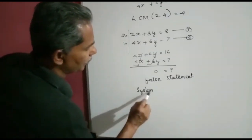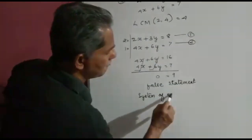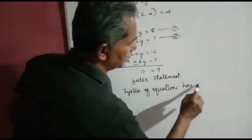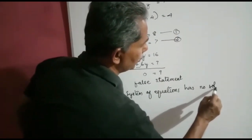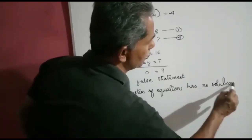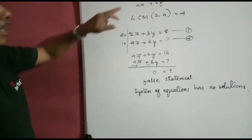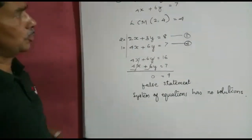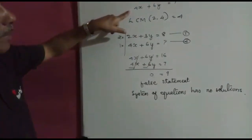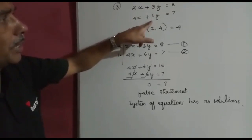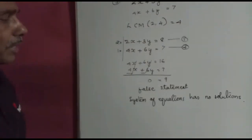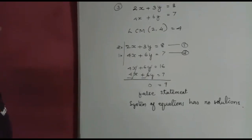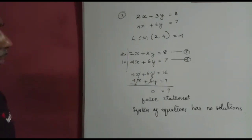This can also be confirmed by comparing the ratios of coefficients: a1 by a2 equals 1 by 2, b1 by b2 equals 1 by 2, and c1 by c2 equals 8 by 7. Since a1/a2 equals b1/b2 but is not equal to c1/c2, this is the condition for no solution.